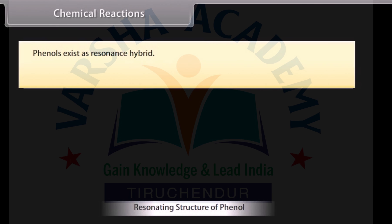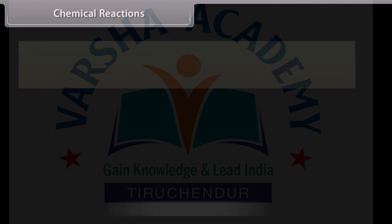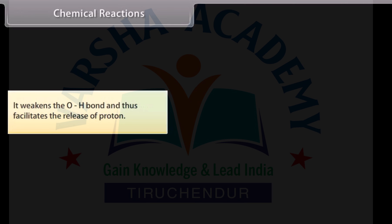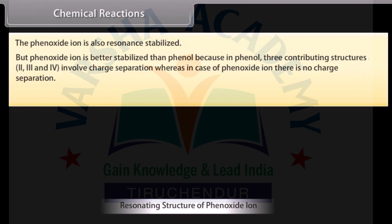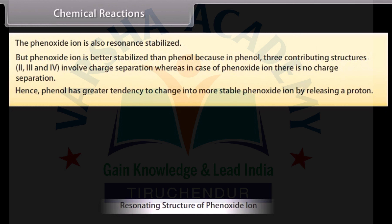Phenols exist as resonance hybrids. As a result of resonance, the oxygen atom acquires a partial positive charge, which weakens the O-H bond and thus facilitates the release of a proton. The phenoxide ion is also resonance-stabilized, and is better stabilized than phenol, because in phenol 3 contributing structures involve charge separation, whereas in the phenoxide ion there is no charge separation. Hence, phenol has a greater tendency to change into the more stable phenoxide ion by releasing a proton.